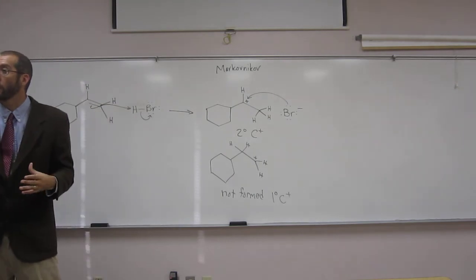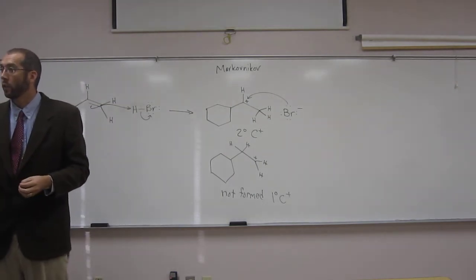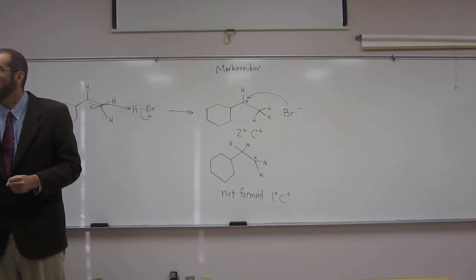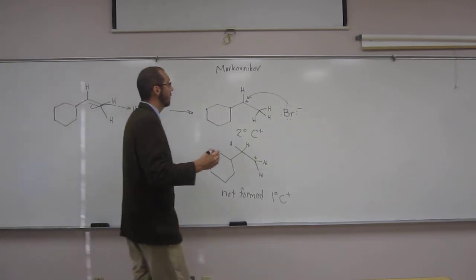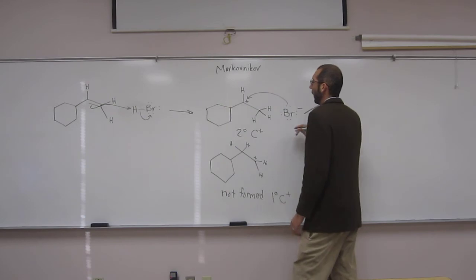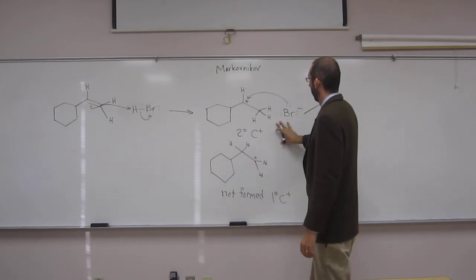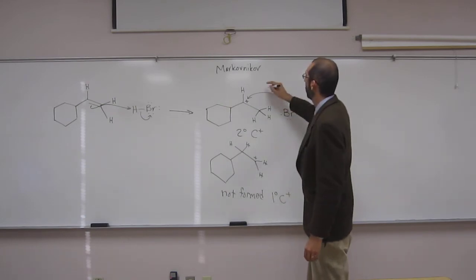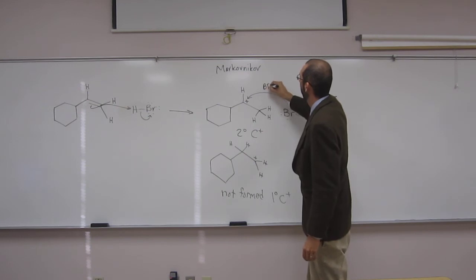And there's no reason why the bromide would prefer to choose the back face over the front face. So we're going to get what we call a racemic mixture.